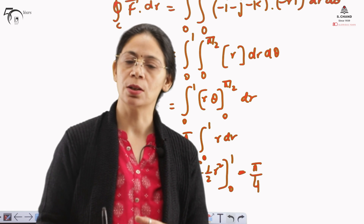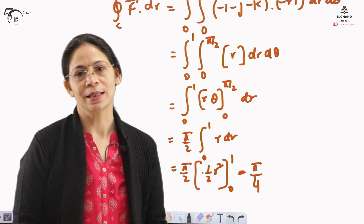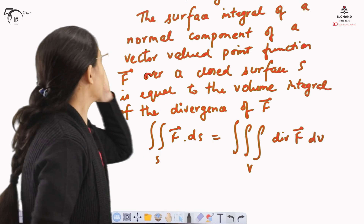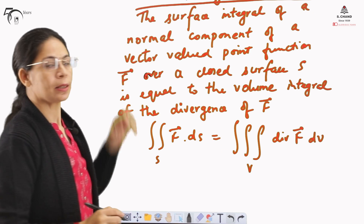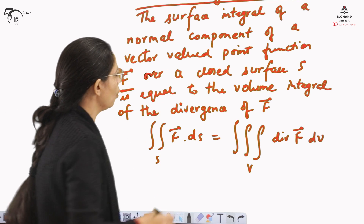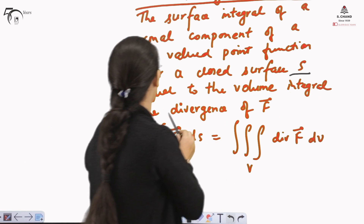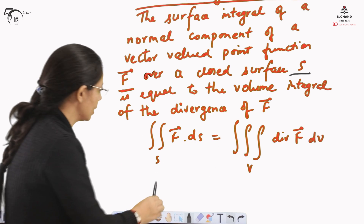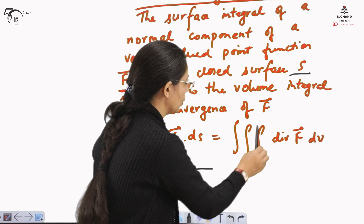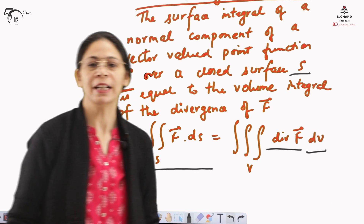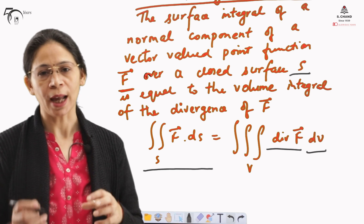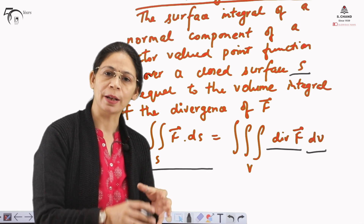That is how Stokes' theorem is used. Stokes' theorem can be understood as an extension of Green's theorem. Next in the row is the Gauss divergence theorem. Its statement says that the surface integral of the normal component of a vector-valued function F over a closed surface S equals the volume integral of the divergence of F. Mathematically: ∬_S F·dS = ∭_V (div F) dV, where dV = dx dy dz.